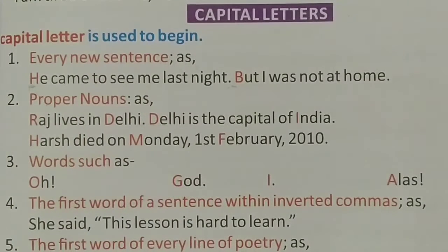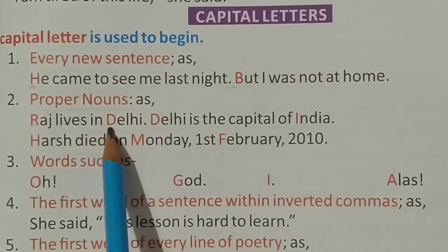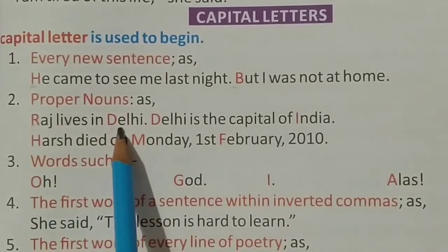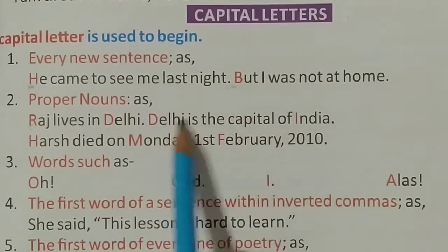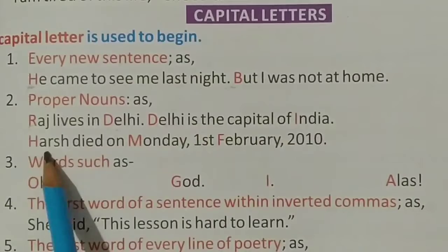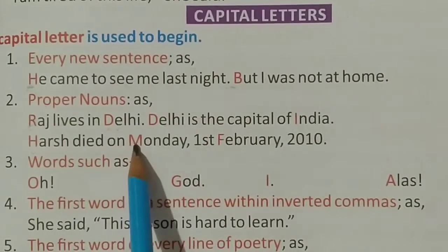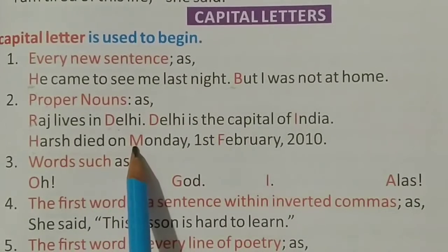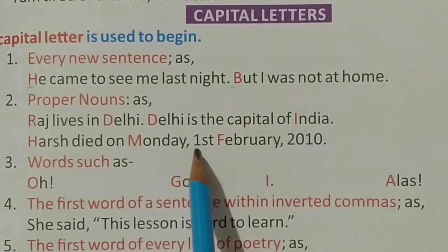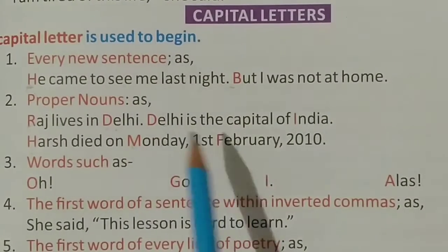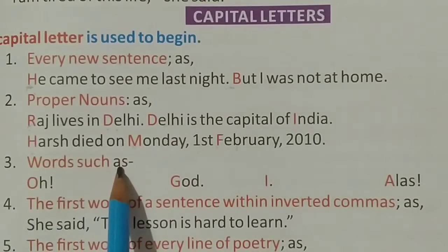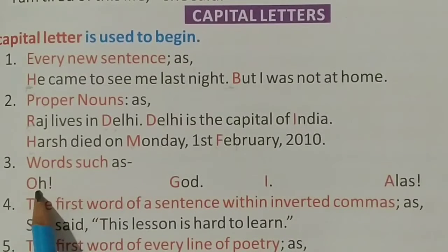The second rule is proper nouns. Whenever there is a proper noun — the name of any person, place, or thing — we write it with a capital letter. For example: 'Raj lives in Delhi.' Raj and Delhi are proper nouns. 'Delhi is the capital of India.' Delhi and India are proper nouns. 'Harsh died on Monday.' Harsh and Monday are proper nouns. 'First February 2010.' February is a proper noun.